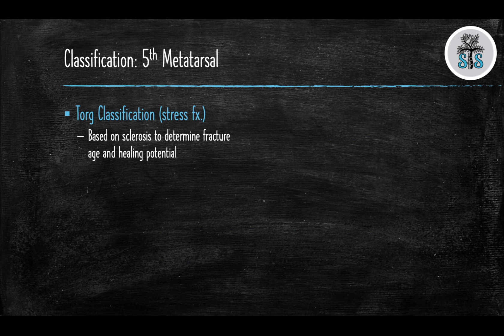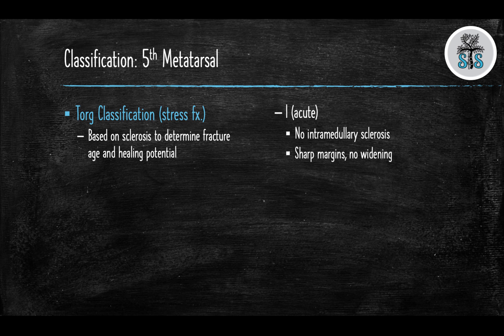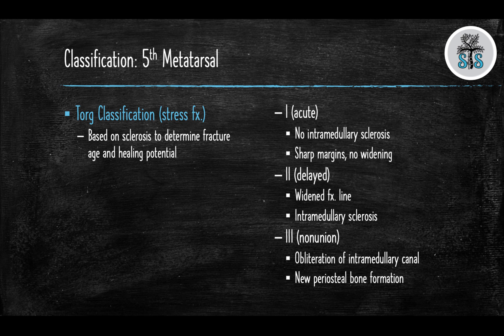There is one more classification to be familiar with: the TORG classification, used for stress fractures of the 5th metatarsal. It uses the amount of sclerosis to define the age of the fracture and healing potential. Type 1 is acute with no intramedullary sclerosis, sharp margins, and no widening. Type 2 is a delayed fracture with widening of the fracture line and intramedullary sclerosis. Type 3 is a non-union with obliteration of the intramedullary canal.